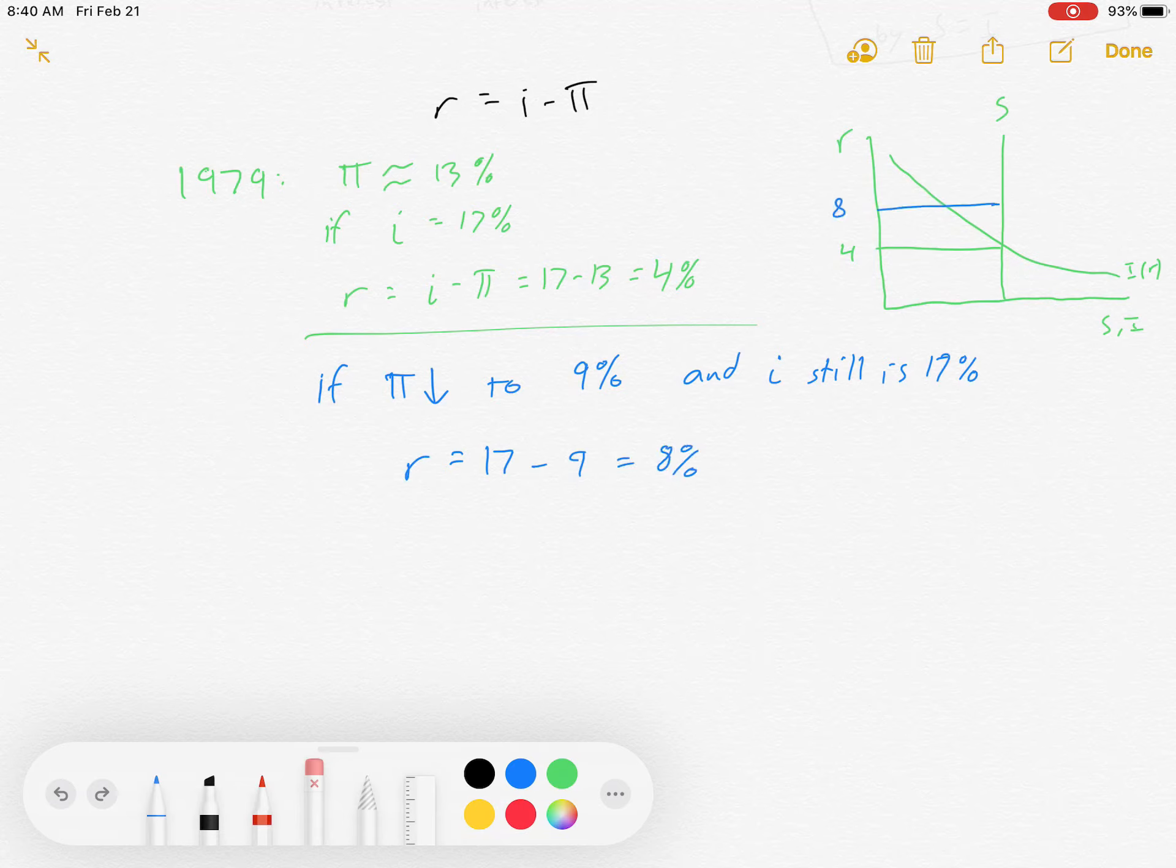But this creates a surplus. Our real interest rate is 8%, and on our graph that shows up as such. But the problem is that this creates a surplus in our loanable funds market. Quantity supplied is greater than quantity demanded, so r is going to fall back down to its equilibrium value of 4%.